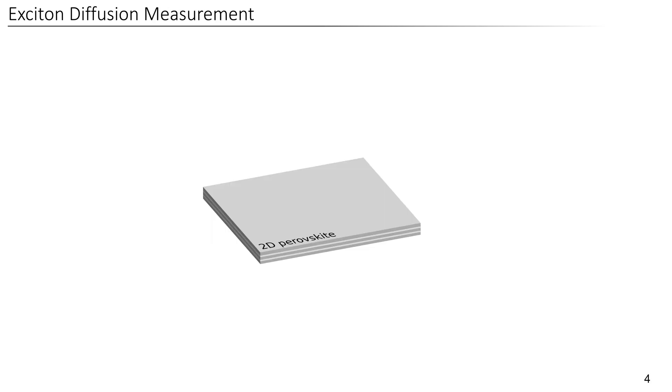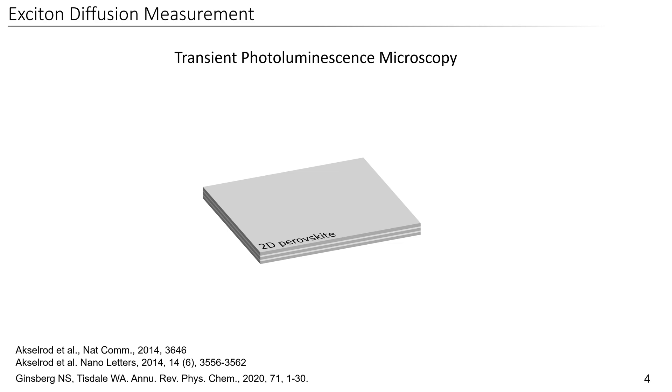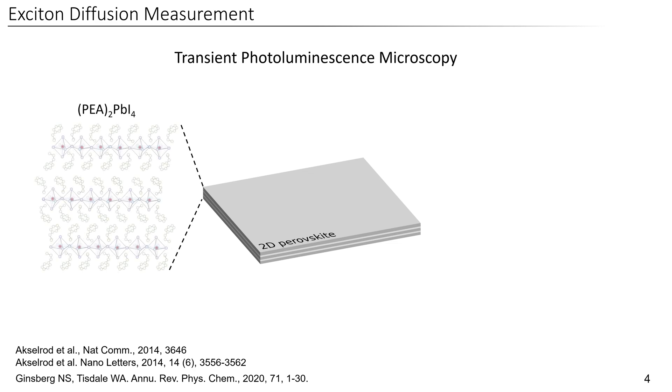To measure exciton transport, we use transient photoluminescence microscopy, which is a technique on the rise for visualizing excited state transport. For these measurements, we start with the nice single crystalline flakes that we just obtained, in our case phenethylammonium lead iodide, and we excite a narrow exciton population with a near diffraction limited laser pulse. After these excitons are generated, they start diffusing outwards over time, which also yields a broader and broader exciton population.